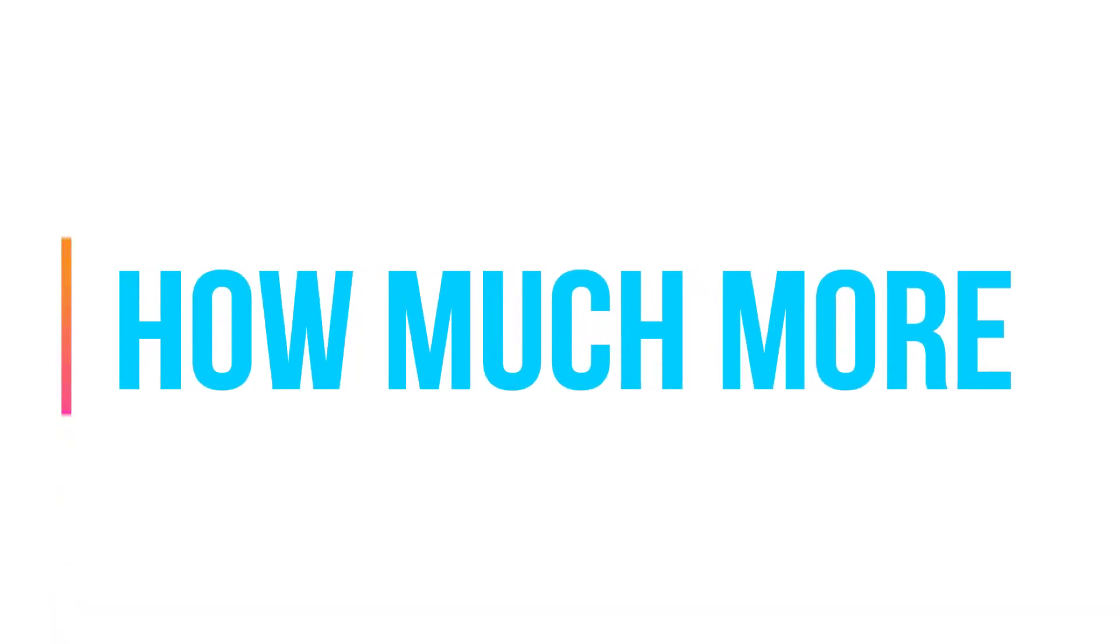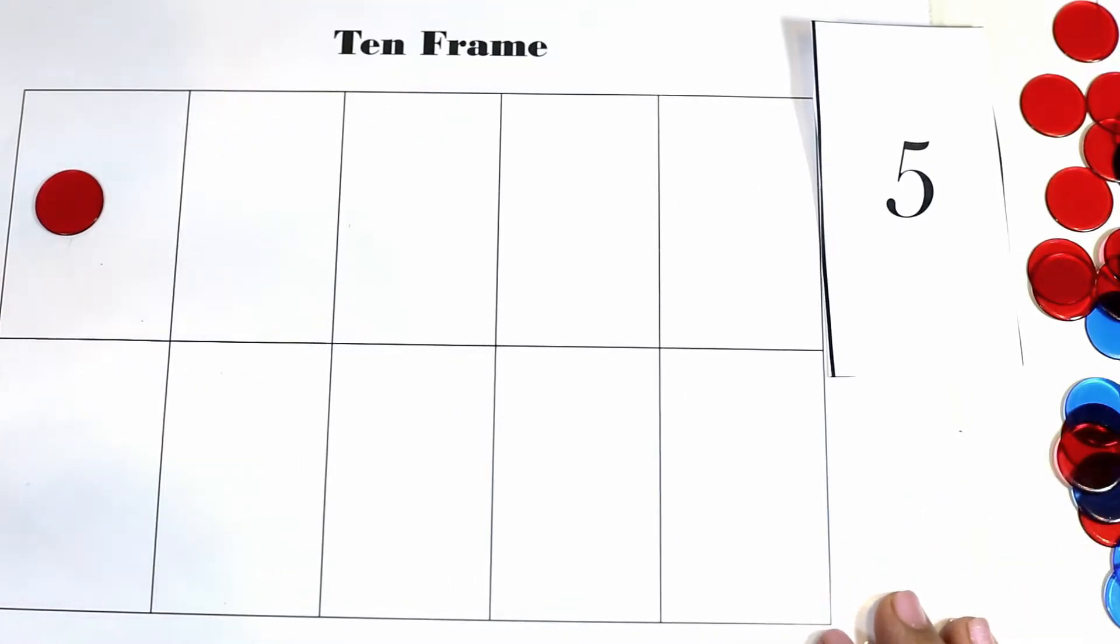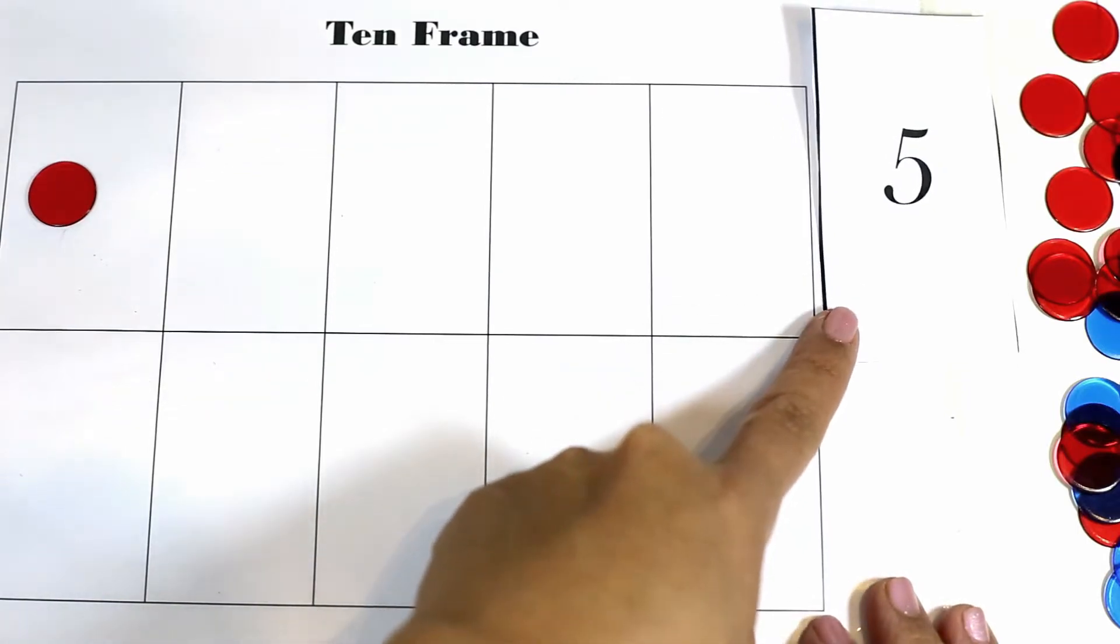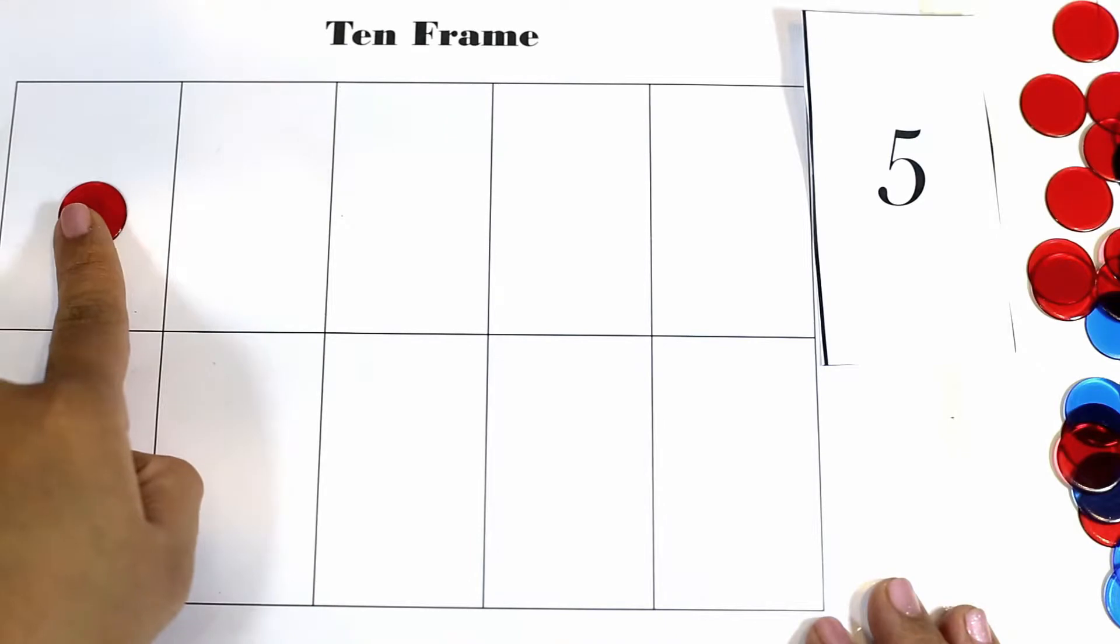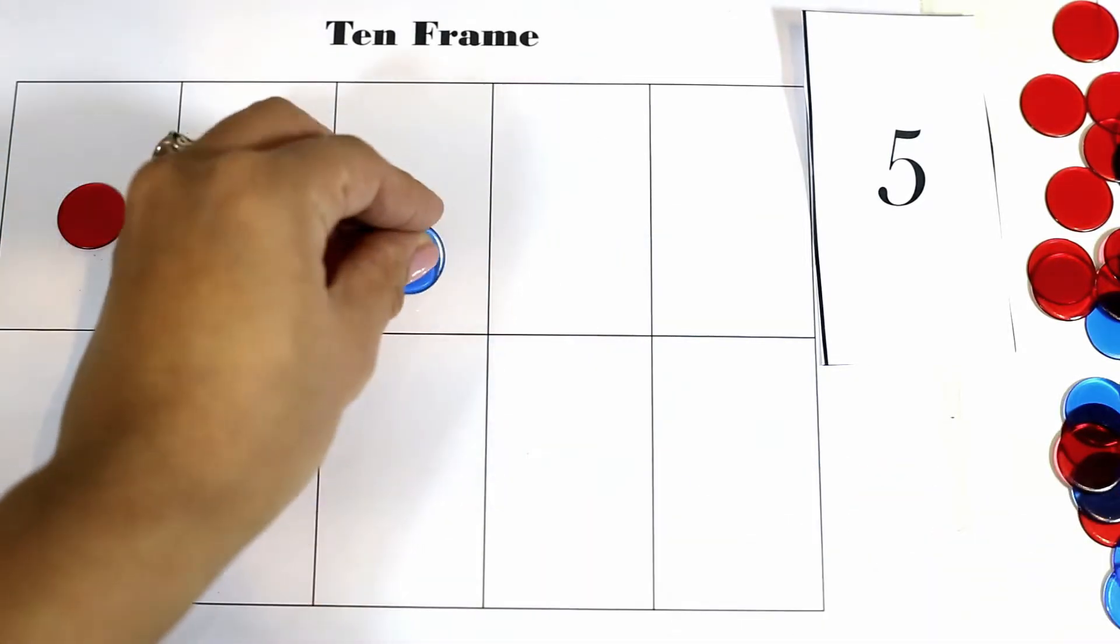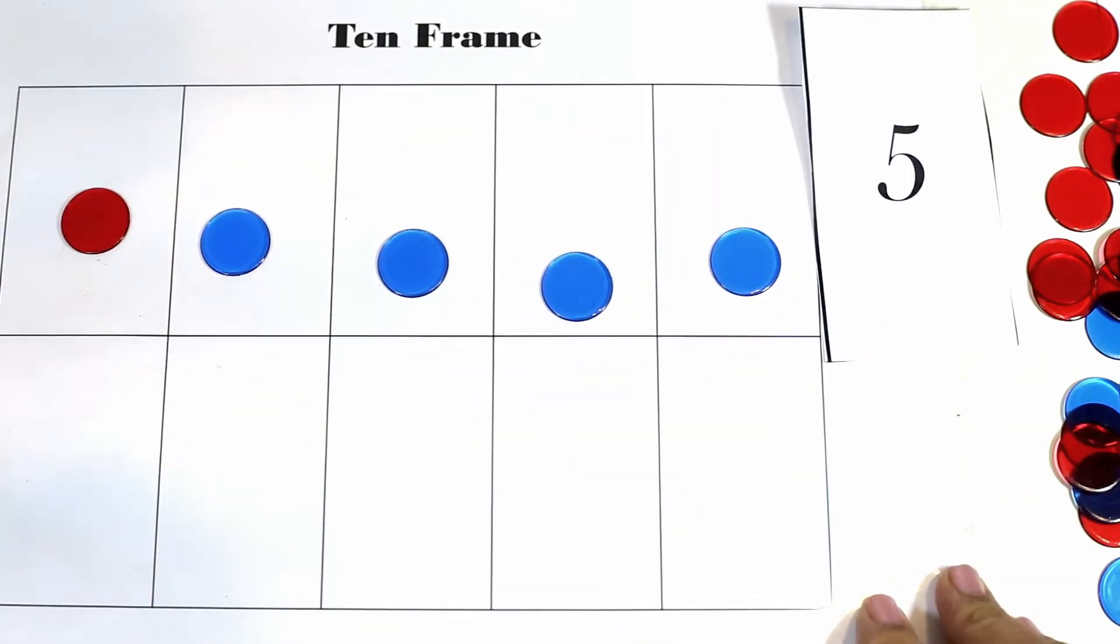So say for example I have the number five and I put a counter down and I tell the learner how much more do I need to get to the number five. So they can see oh there's one there already and I need one, two, three, four more to make five.